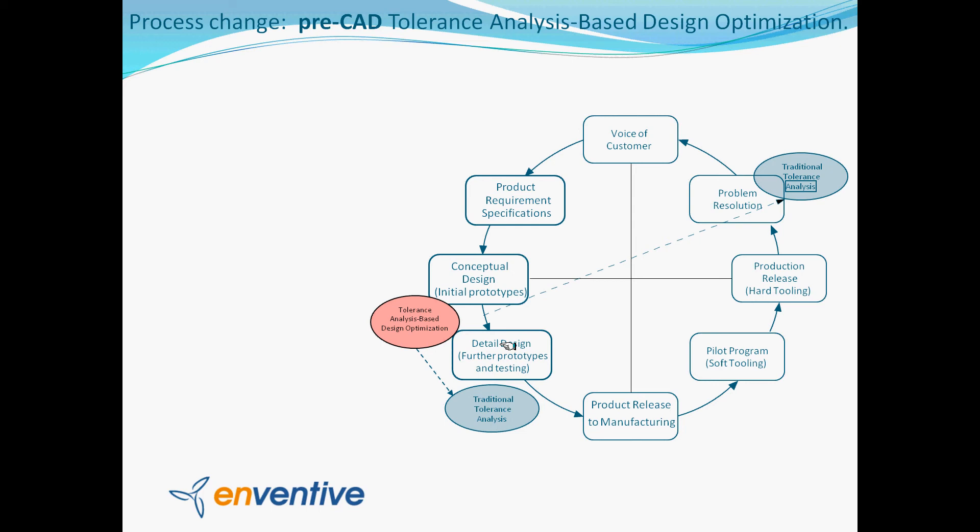This statistical analysis gives the statistical variations and also the list of design parameters that have the biggest impact on these variations. So it's possible to choose properly the nominal values and the tolerance values so that the limits of variations are going to be within the customer specification.